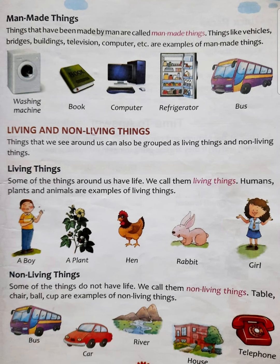The next subheading is living things. Some of the things around us have life — unme jaan hoti hai. We call them living things. Women, plants, and animals are examples of living things. A boy, a plant, hen, rabbit, girl — all these are living things kyunki yeh sabhi zinda hain, inme jaan hoti hai, isliye inhe hum living things kehte hain.